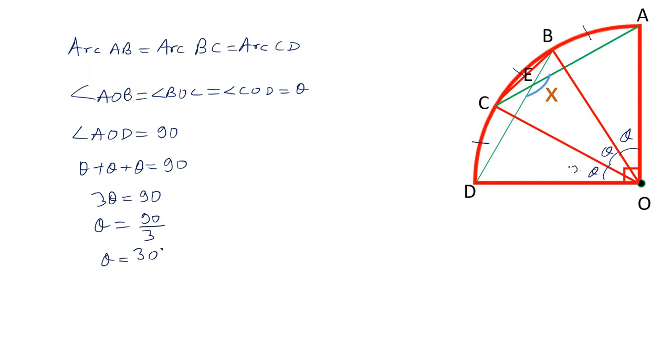Each of these angles is 30 degrees. After this, we will apply a theorem. In a circle, the angle subtended by an arc at the center is twice the angle subtended by the arc at the circle. If this is theta, then this is theta by 2. Remember this theorem.